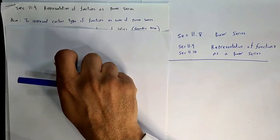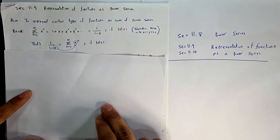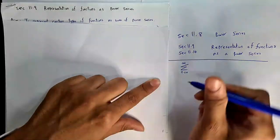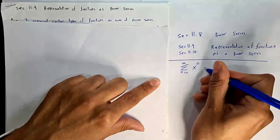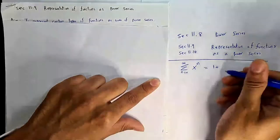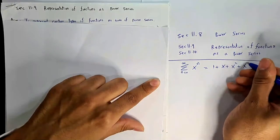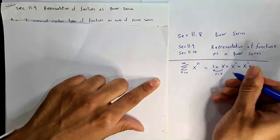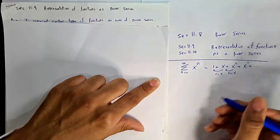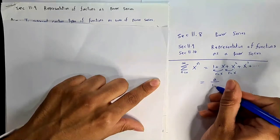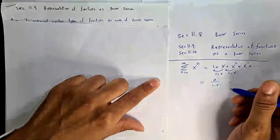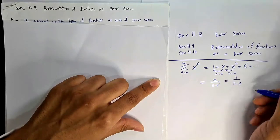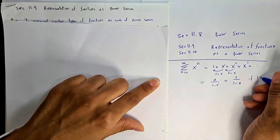For the general case, we need to wait for section 11.10. The key idea here is based on the geometric series: Σ(n=0 to ∞) xⁿ. Expanding it: x⁰ + x¹ + x² + x³ + ... This is a geometric series with ratio r = x. It converges to a/(1-r), provided |r| < 1, which equals 1/(1-x) when |x| < 1.